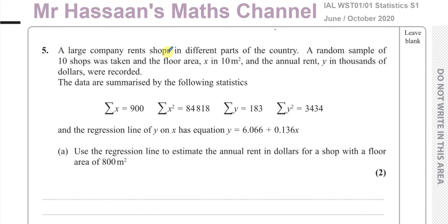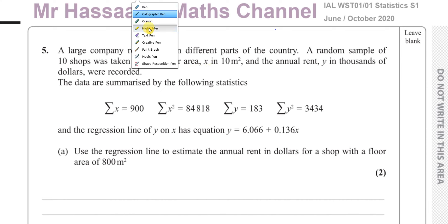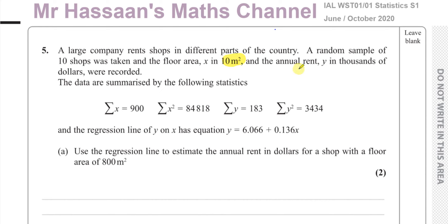It tells you that a large company rents shops in different parts of the country. A random sample of 10 shops was taken. The floor area X is in tens of meters squared, and the annual rent Y in thousands of dollars were recorded. The summary statistics given are: sum of X = 900, sum of X² = 84,818, sum of Y = 183, and sum of Y² = 3,434.